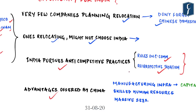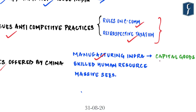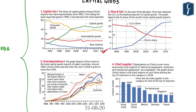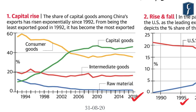The advantages China offers are not available in India. For example, China's manufacturing infrastructure is unparalleled. One key part of this is the production of capital goods — goods used in the production of other items, like a capital investment that increases production capacity. The data point on page seven includes four images throwing light on the absolute dominance of China in the production of capital goods. The first image shows the percentage of overall exports on the Y-axis and the year on the X-axis.